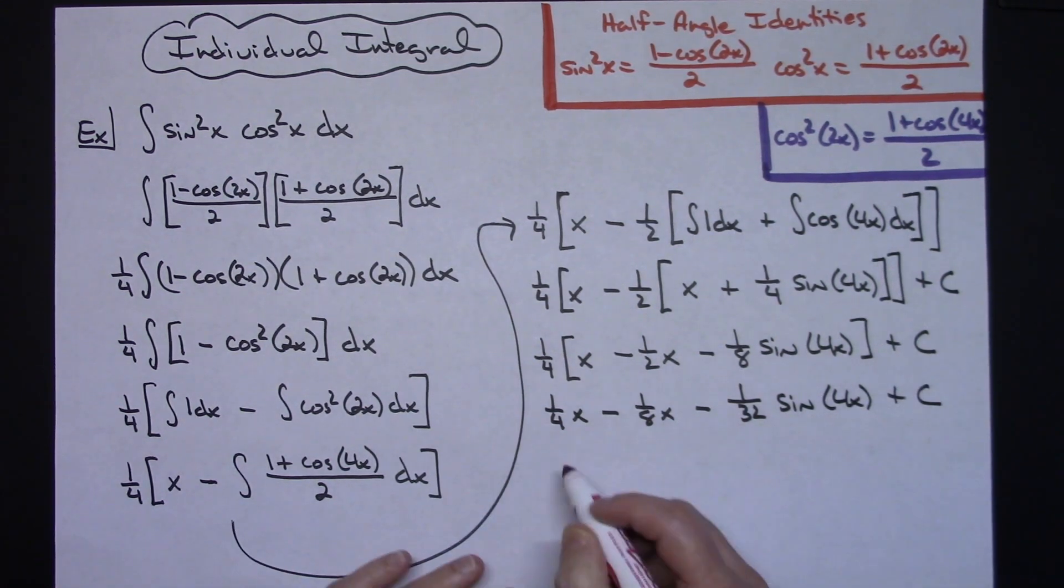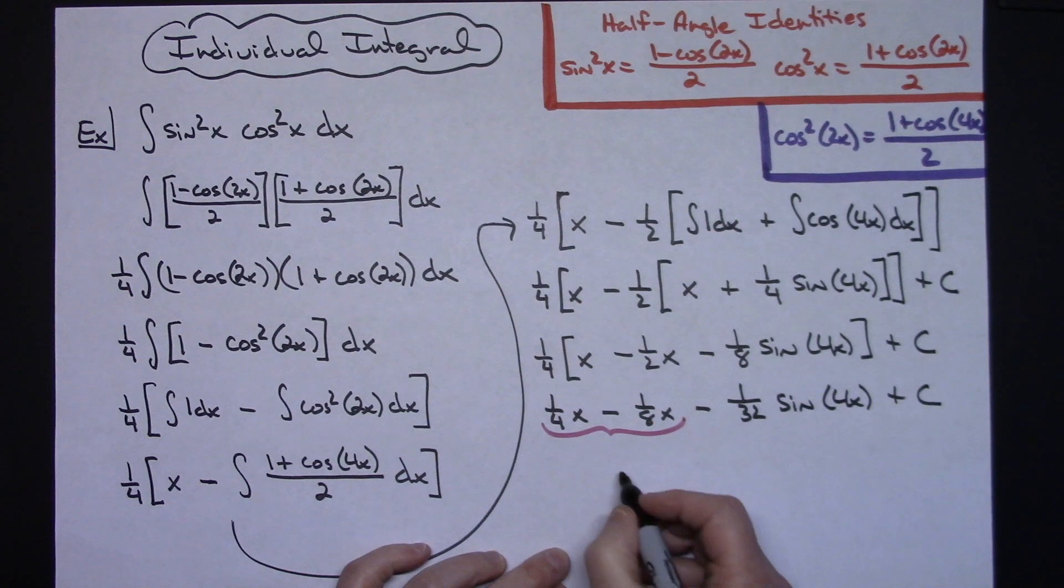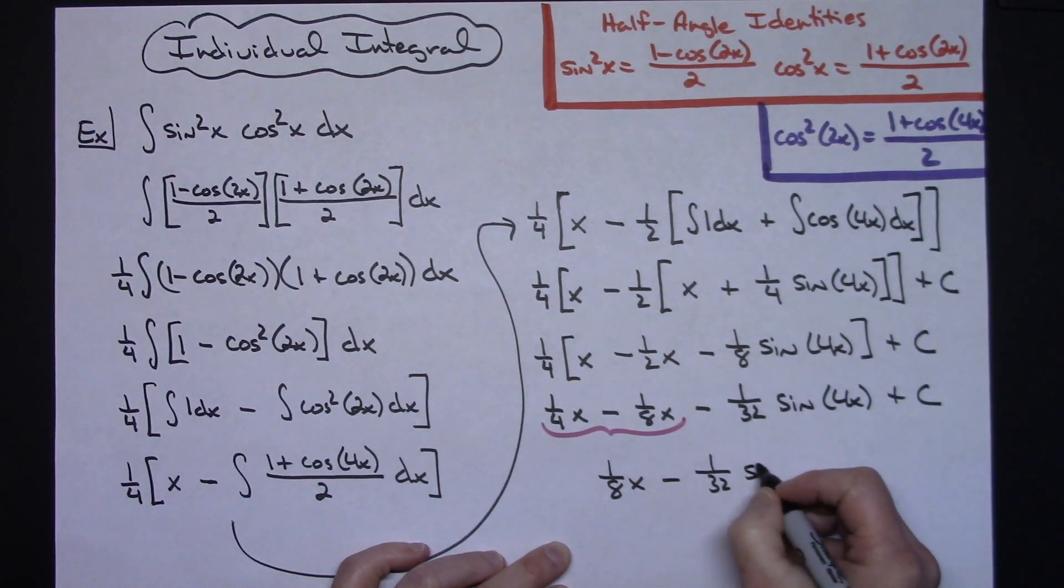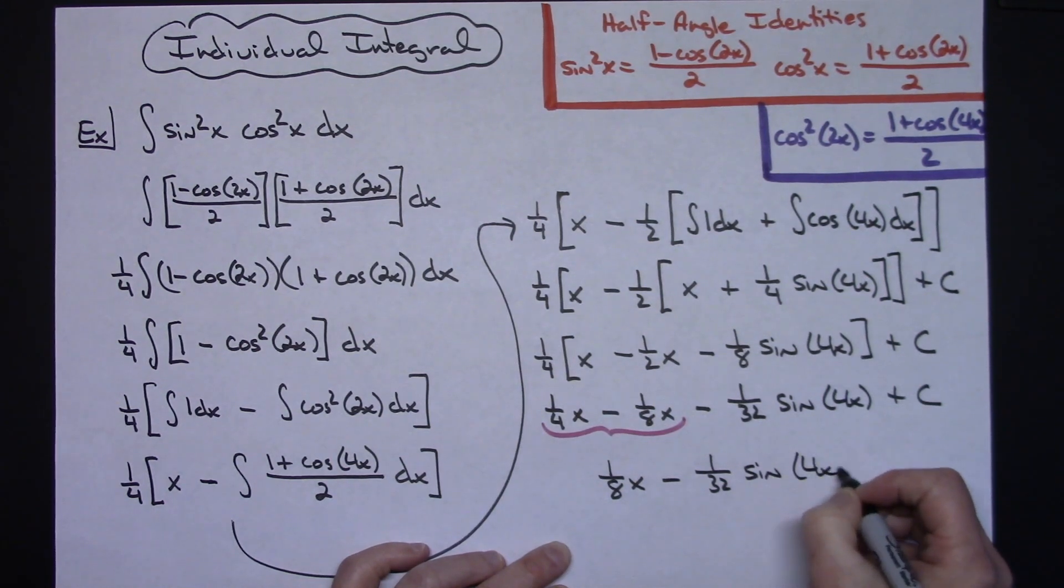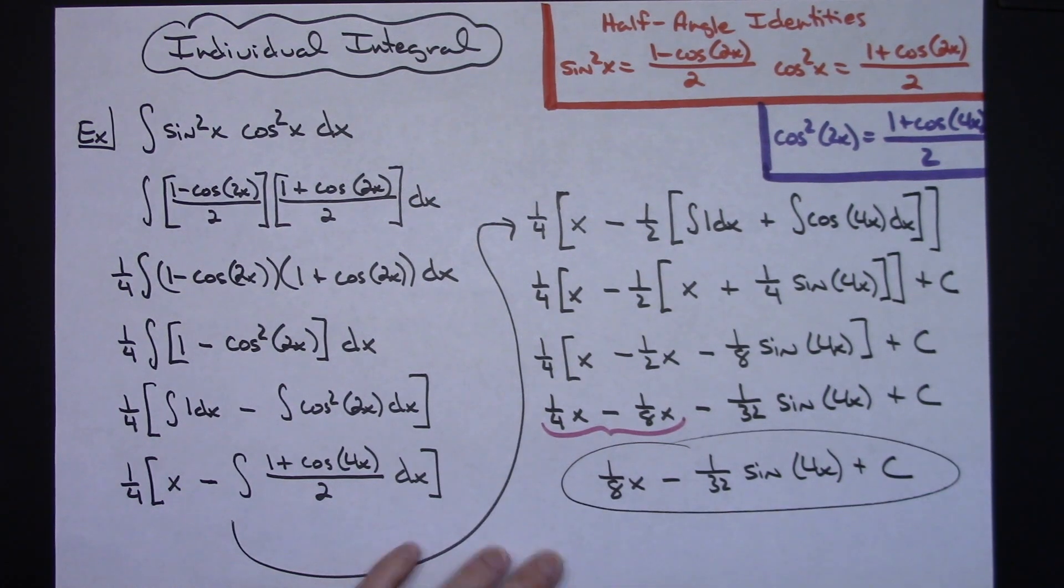And I think I'm going to go one more step here because these two are like terms so I can put those two together. So 1 fourth minus 1 eighth is going to give me 1 eighth x minus 1 over 32 sine 4x plus c. And I think we're actually done at that point.